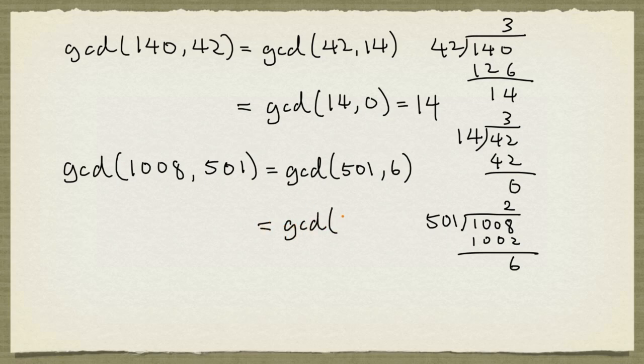And this is equal to the GCD of 6 and the remainder of 501 divided by 6. So 6 times 8 is 48, and 6 times 3 is 18, and that gives us a remainder of 3. So it's GCD of 6 and 3.